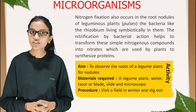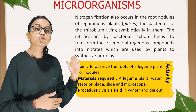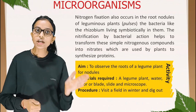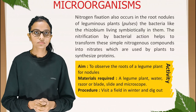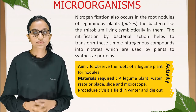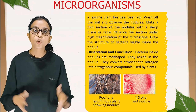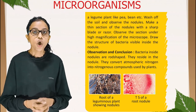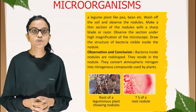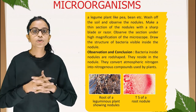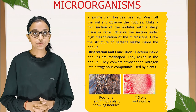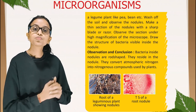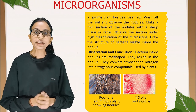Activity: aim is to observe the roots of a legume plant for nodules. Materials required: a legume plant, water, razor or blade, slide, and microscope. Procedure: visit a field in winter and dig out a legume plant like pea or bean. Wash off the soil and observe the nodules. Make a thin section of the nodules with a sharp blade. Observe under high magnification. Observation and conclusion: bacteria inside nodules are rod-shaped; they reside in the nodule and convert atmospheric nitrogen into nitrogenous compounds used by plants. The first picture shows root of a leguminous plant with nodules; the second shows a cross-section of a root nodule.